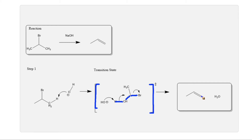Although this reaction has its own name, dehydrohalogenation, this is an example of an E2 elimination mechanism.